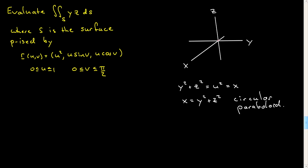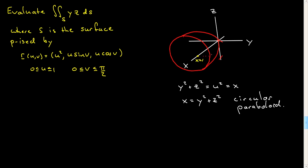Let's have a go at sketching it. This is meant to be the point x equals 1. Note that u goes from 0 to 1, so x will also go from 0 to 1. This is essentially the same parametrization used in the previous example, and v, which plays the role of an angular variable theta, goes from 0 to pi over 2. So the surface lies in the first octant, the same as the last example, and we cut off this surface to just the first octant.